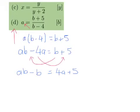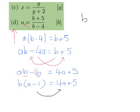Now once we've done that, we can factorize the Bs out of the left-hand side to get B bracket A minus 1, because remember there's a hidden 1 in front of the B, and that is equal to 4A plus 5. That means we can write our final answer by dividing by A minus 1, and we get B equals 4A plus 5 over A minus 1.